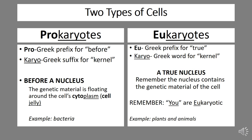On the other side, we have eukaryotic cells. Eukaryotes have a nucleus — plants and animals fall into this category. In Greek, the prefix 'eu' means true, and 'karyo' means kernel, so eukaryotes have a true nucleus. Remember, you are eukaryotic.